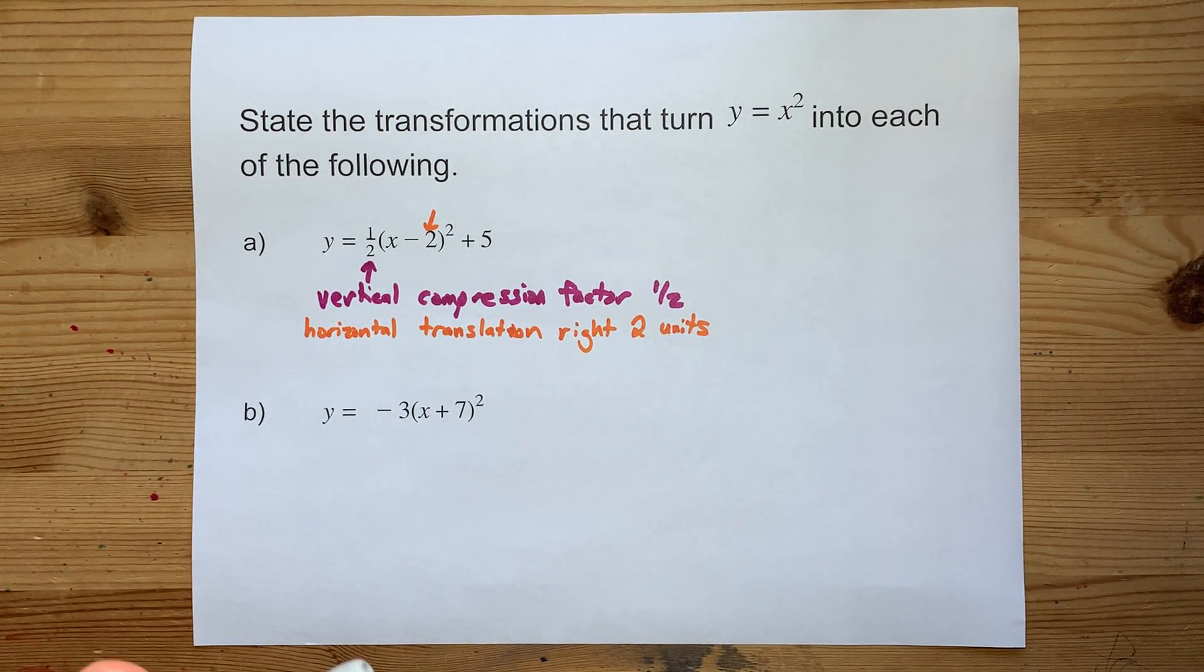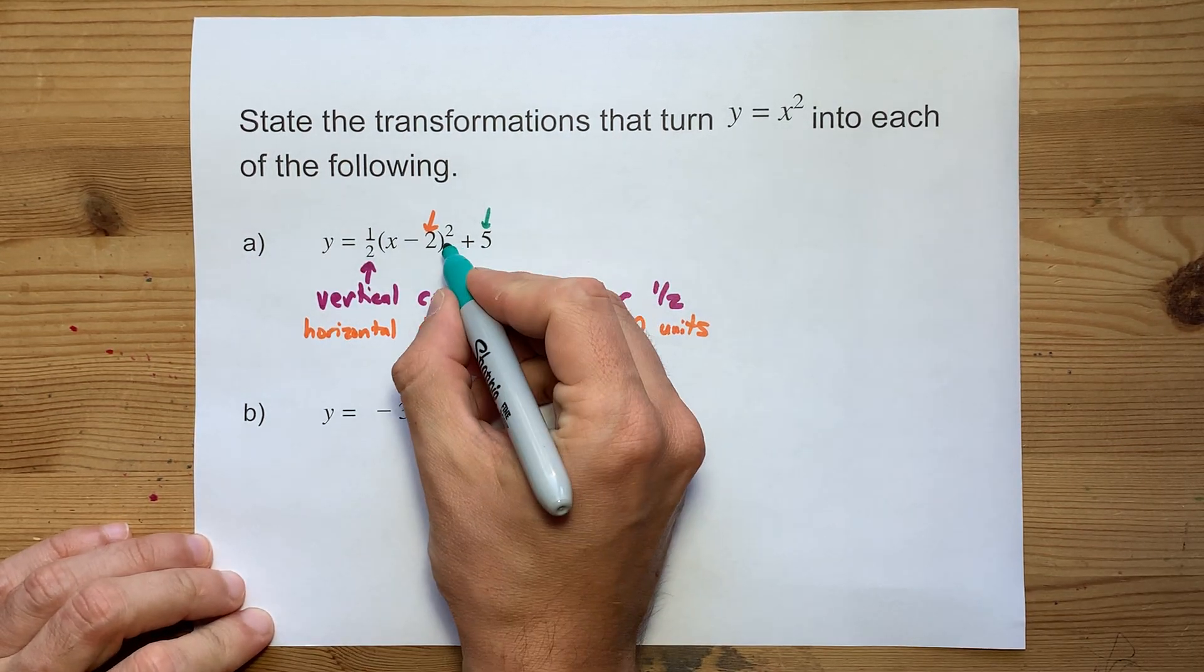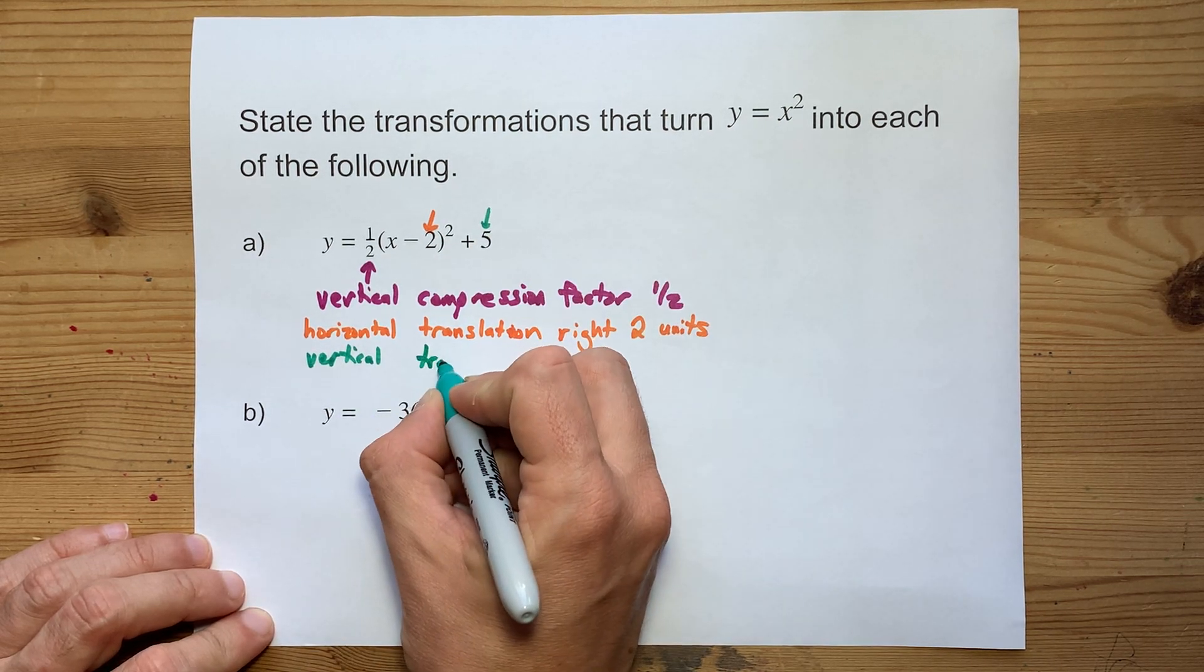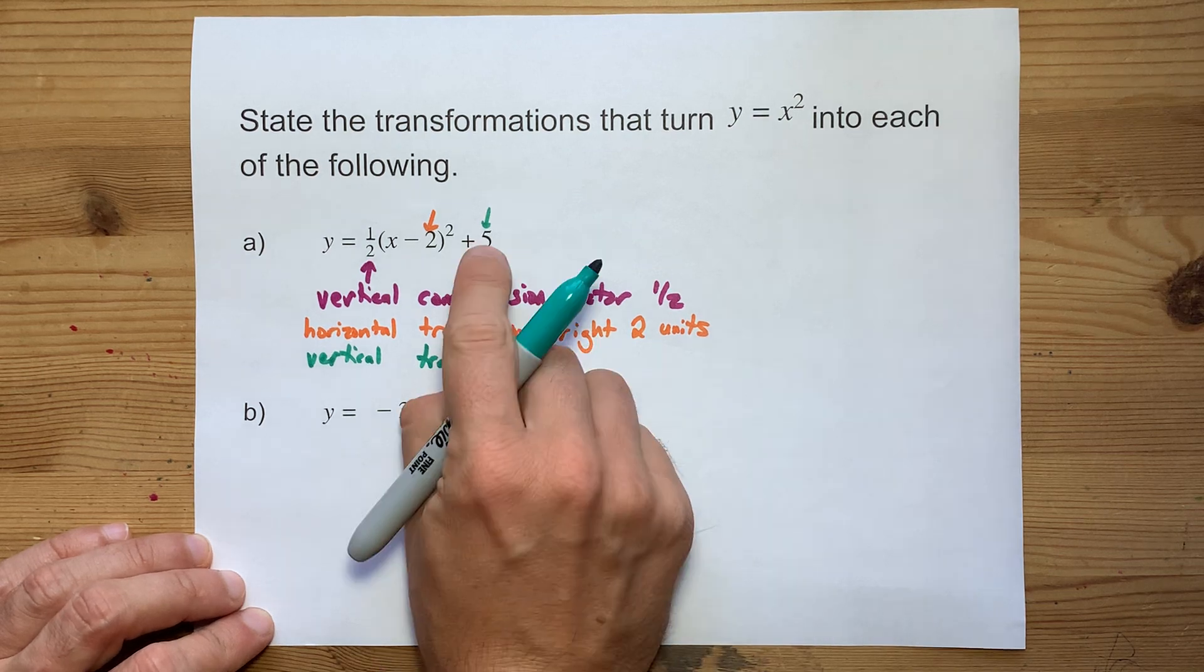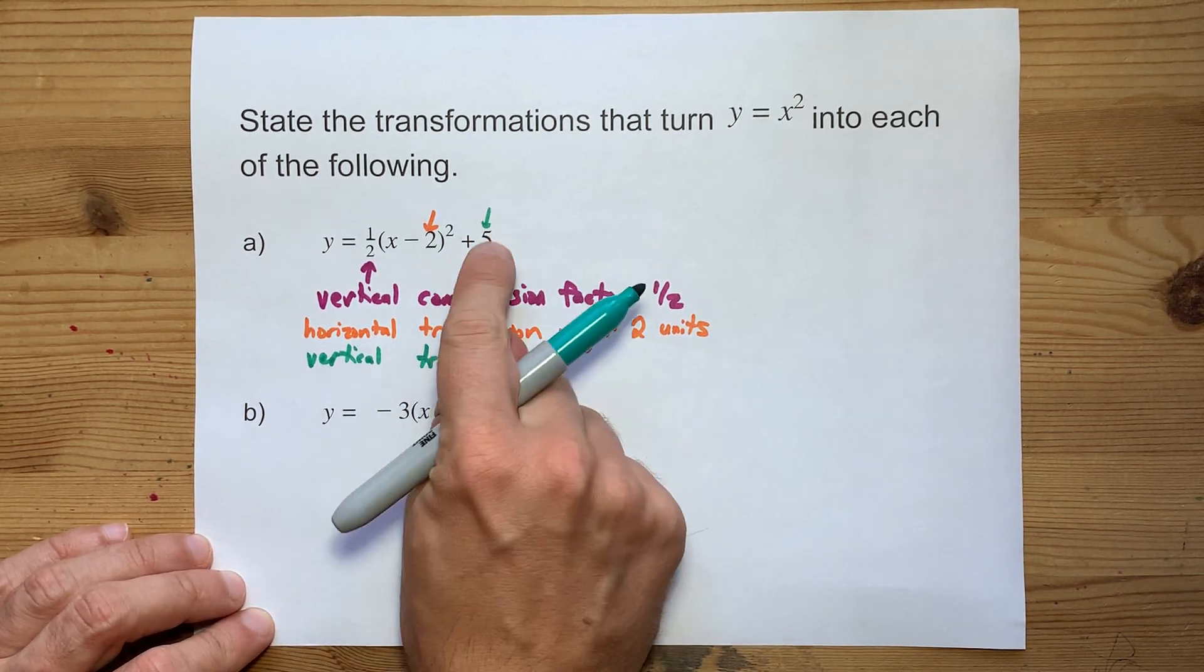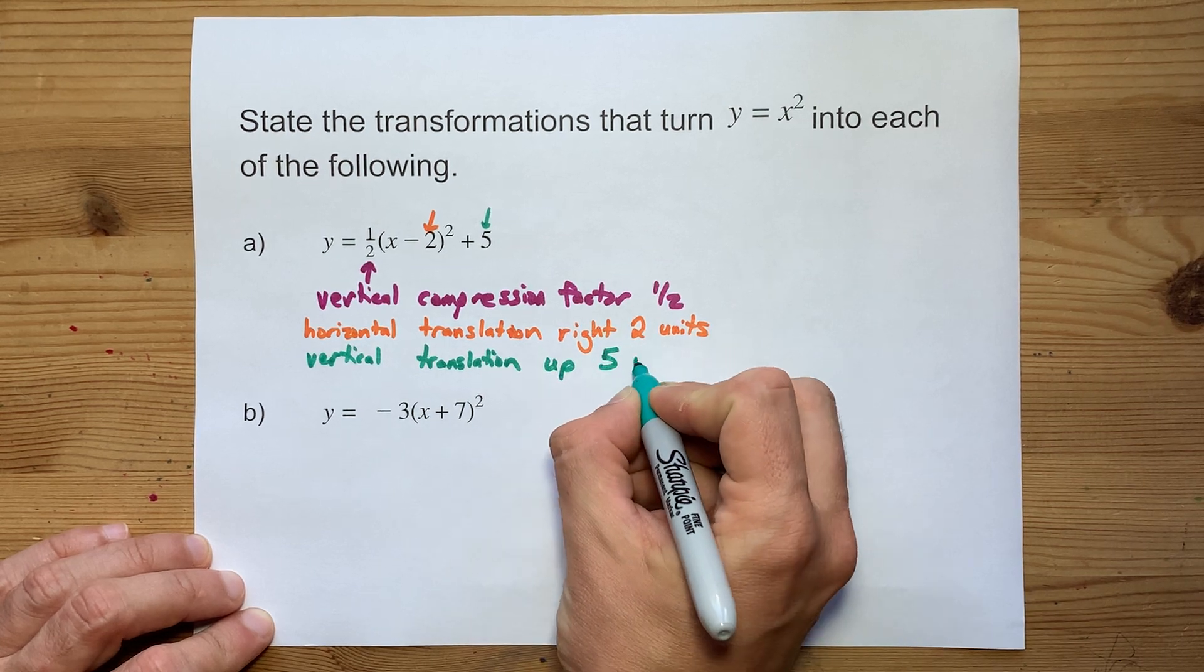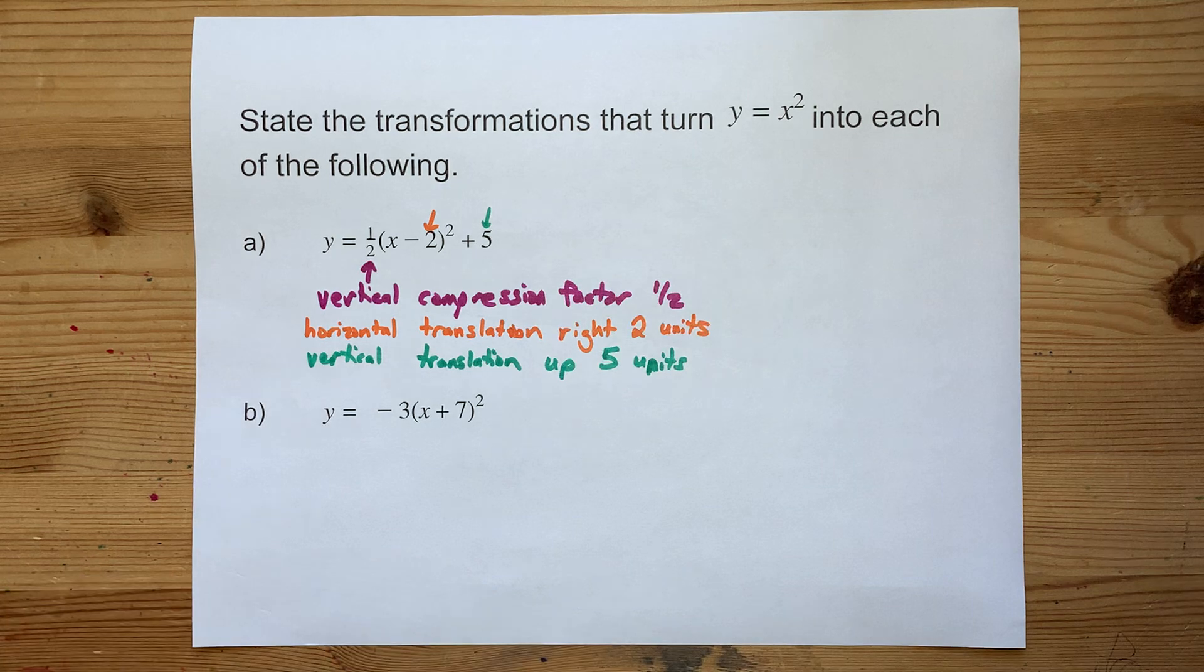And likewise, well, not likewise, this plus 5, which is outside of the brackets, is vertical. But because it's added or subtracted, it's also a translation. This one is as you expect. Vertically, adding 5 is shifting it up by 5 units. There you go. It's probably worth about 3 marks for you.